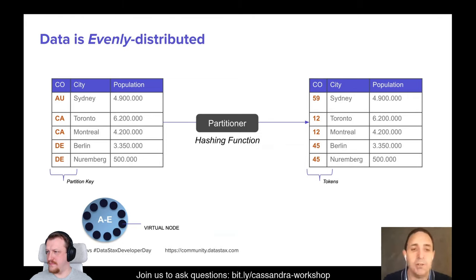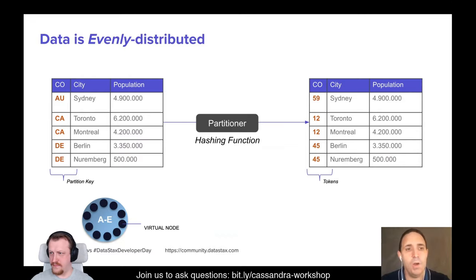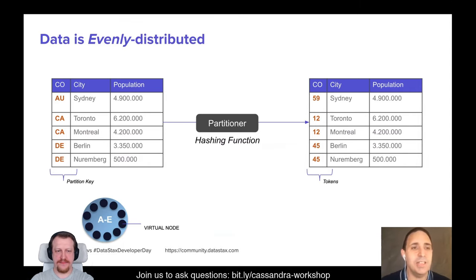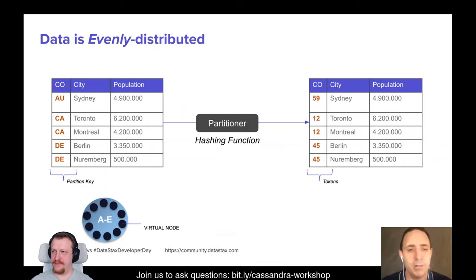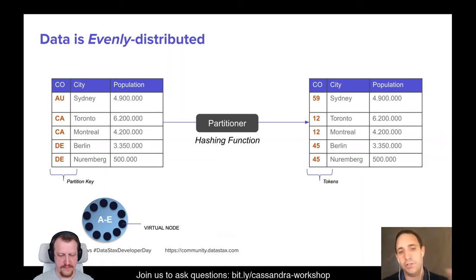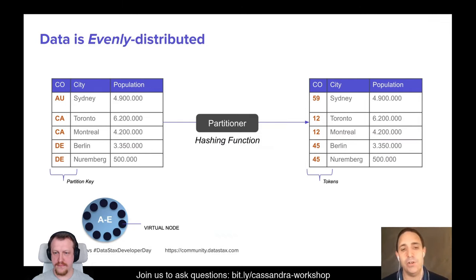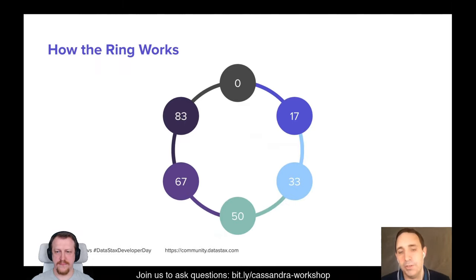Data is distributed around the cluster. If you choose a bad partition key — like the first letter of a country name — most data will land on the same node, causing data skew. That's why Cassandra has an internal mechanism to distribute keys evenly. When you hash the partition key, you get a number called a token, and the hashing function ensures token distribution is even. Each node acts as multiple virtual nodes and is in charge of a token range — a fraction of the whole table.